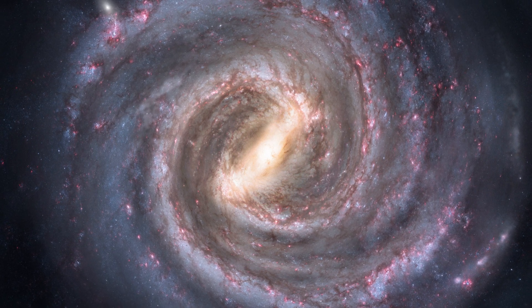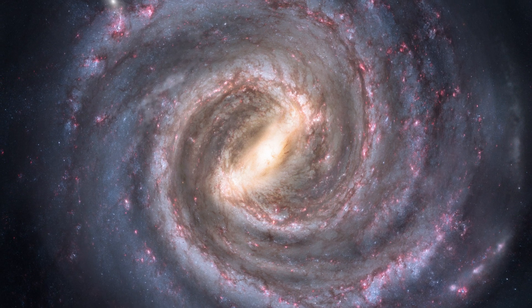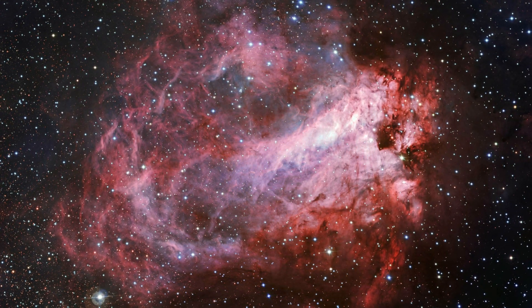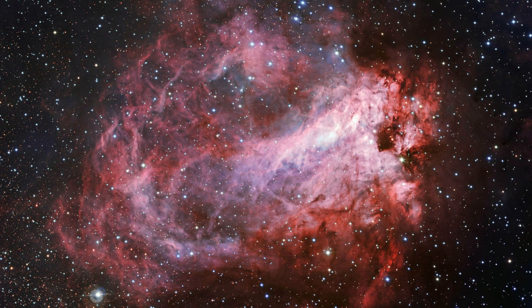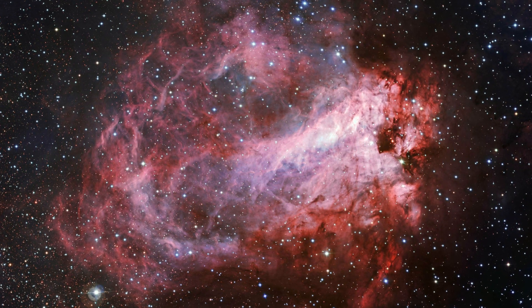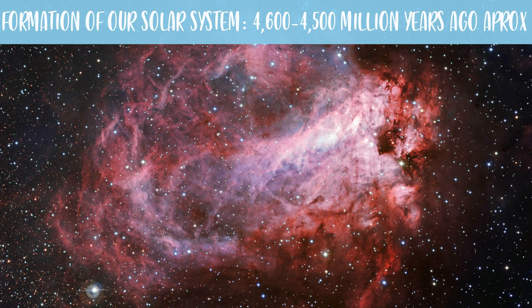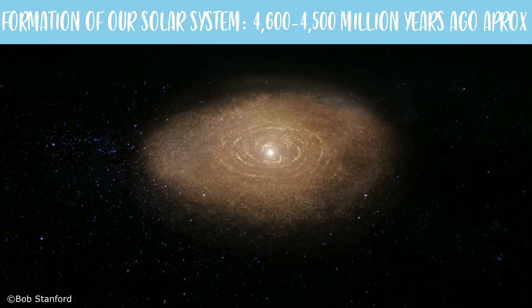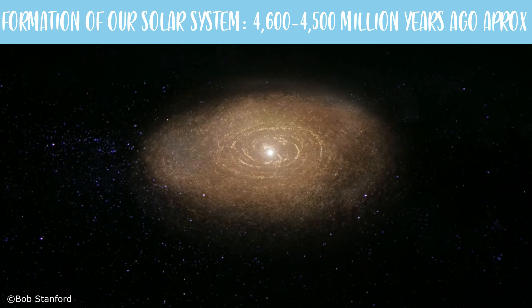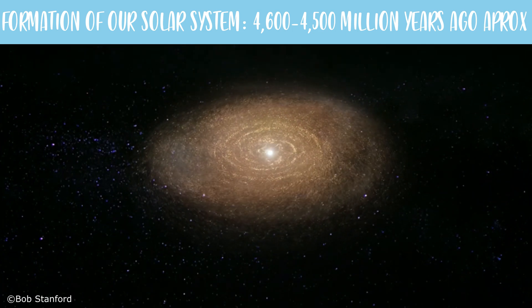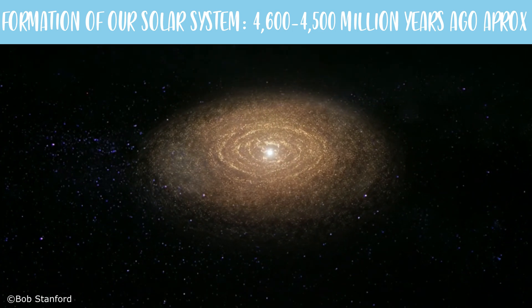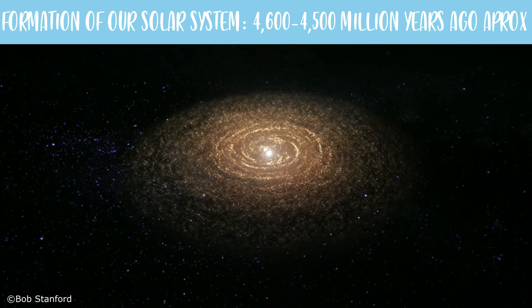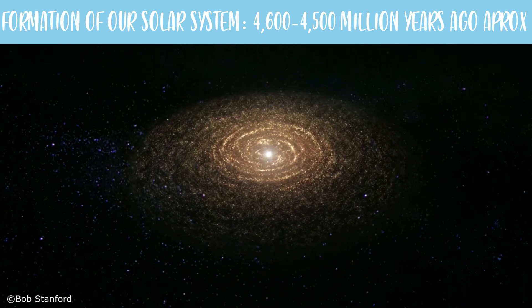About 4.6 billion years ago, in our region of the Milky Way, a nebula — a large cloud of dust and gas floating in space — collapsed upon itself due to its enormous mass. The materials concentrated, and due to the force of gravity, the heaviest ones stayed at the center, beginning to create the sun. The great mass of that nascent sun caused a protoplanetary disk, flattened and rotating around the sun. And then, the planets began to form.